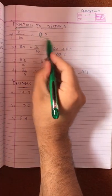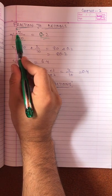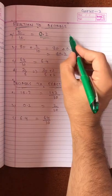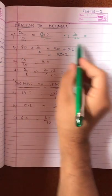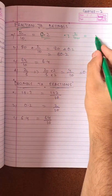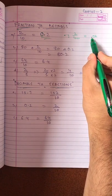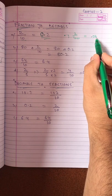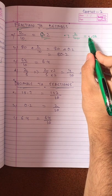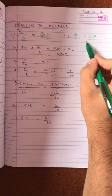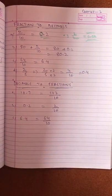So what did we do? Because ten has one zero, the decimal moves one step left. If we have two zeroes, for example 2 by 100, then what happens? The decimal goes two steps. Now there is only one digit, so how will it go two steps? We will put zero with two, making it point zero two. If we have three zeroes, then we put three steps and add more zeroes. It's simple.